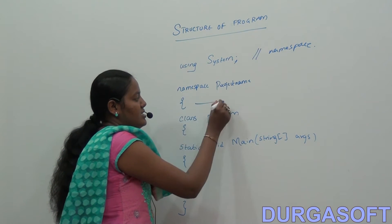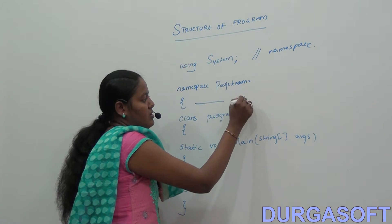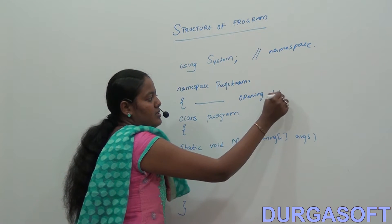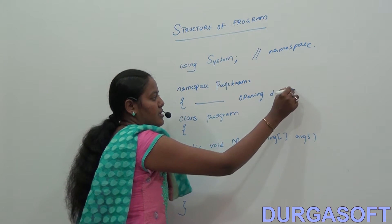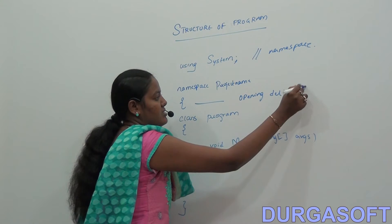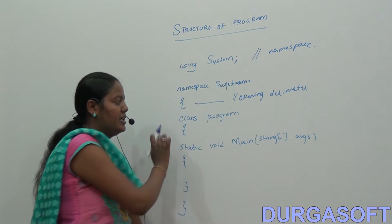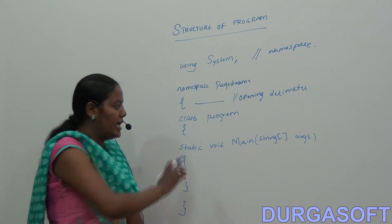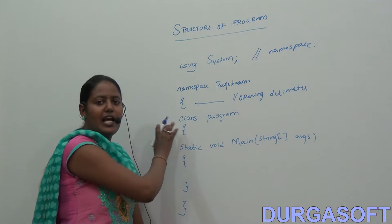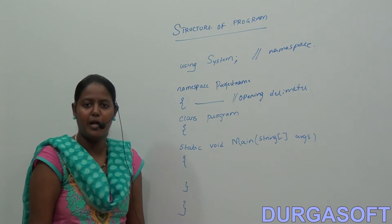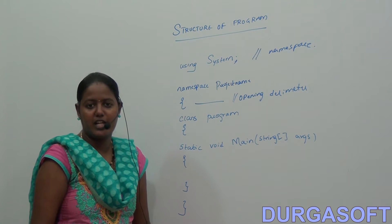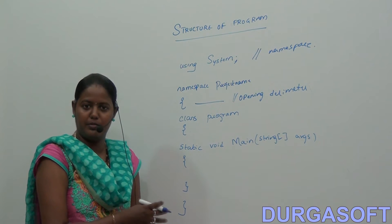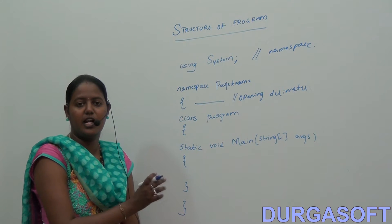And next, this is called the opening delimiter. After that, we have 'class program' — here, 'class' is the keyword and 'program' is the default class name provided by our structure.